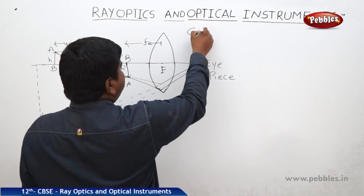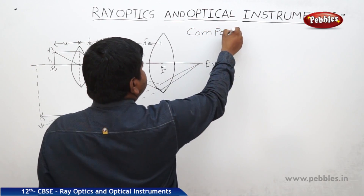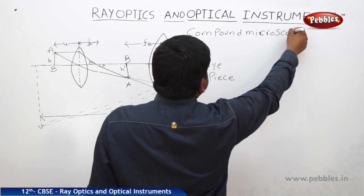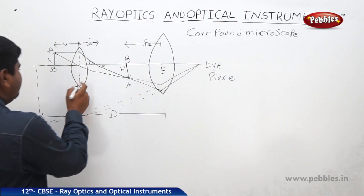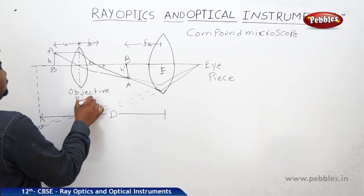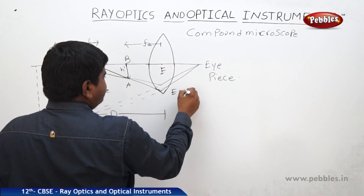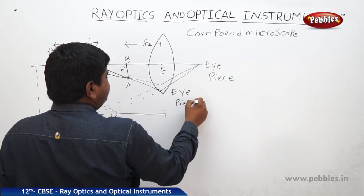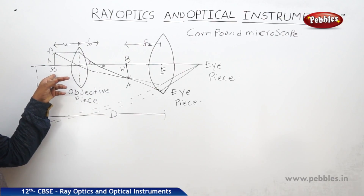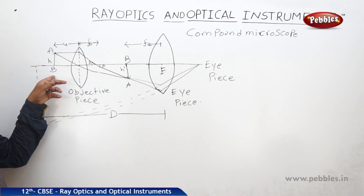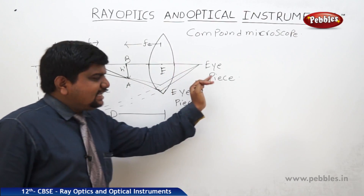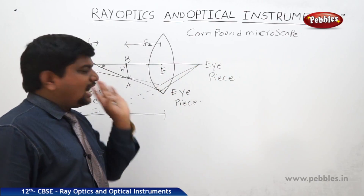Next we will see the compound microscope. It has two lenses: one is the objective piece and the second is the eyepiece. The objective piece is the convex lens which is near to the object — an object is placed in front of this convex lens. And where we are watching the image through our eye, that lens is called the eyepiece.